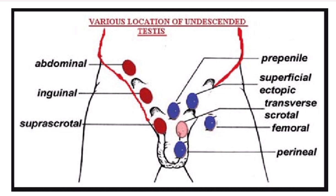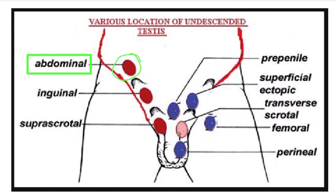First, the testis is located in the posterior or retroperitoneal space — the posterior abdominal area. Then it starts to descend. It enters the deep inguinal ring (internal inguinal ring), travels through the inguinal canal, passes through the external inguinal ring (superficial inguinal ring), reaches the upper part of the scrotum, and finally arrives in the scrotum. The normal pathway is: abdominal → internal inguinal ring → inguinal canal → external inguinal ring → scrotum.